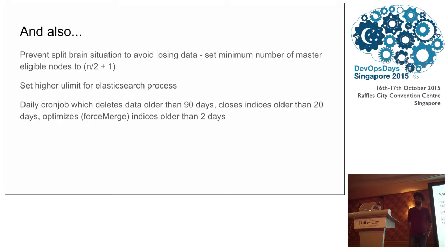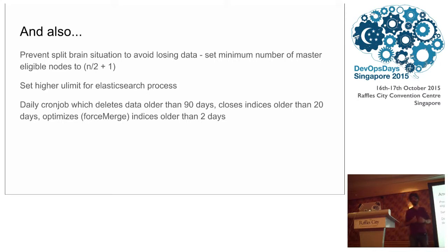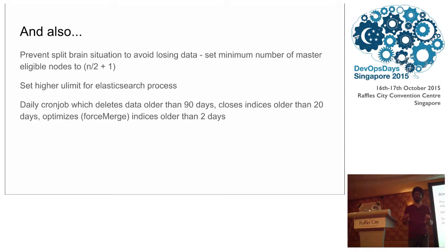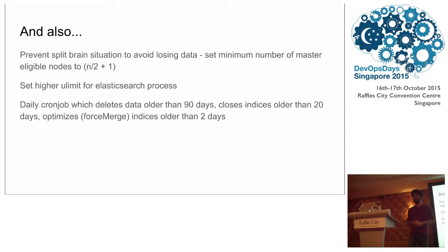One issue we've dealt with: you want to prevent a split-brain situation in Elasticsearch. Elasticsearch is a cluster with a master that keeps track of which node has which shards and where data resides. A split-brain can happen because of a network partition or election timeout for a new master, resulting in two masters running over the same cluster and causing data loss. You need to set a minimum number of master-eligible nodes as a configuration option to prevent that. Also, set higher ULIMIT for Elasticsearch processes so it can open a large number of file descriptors.